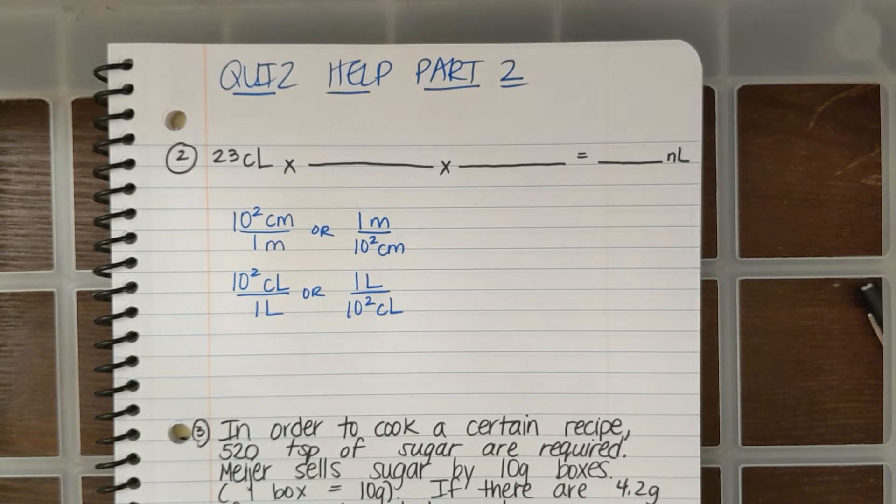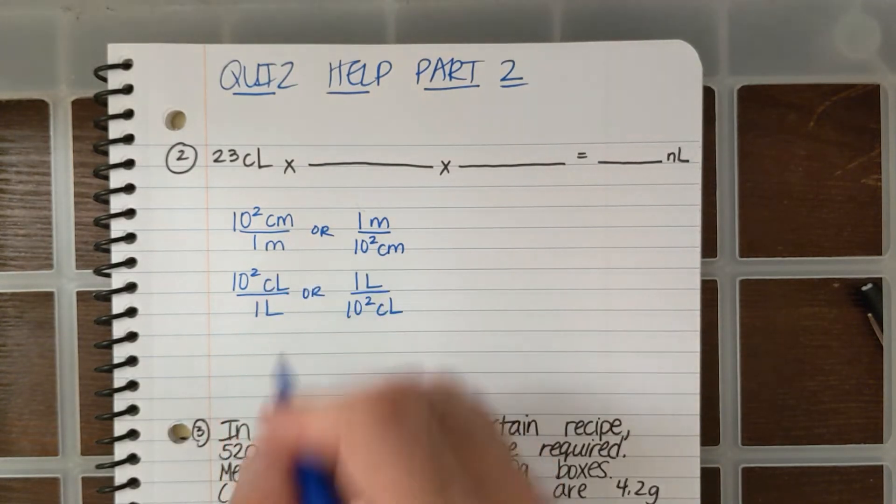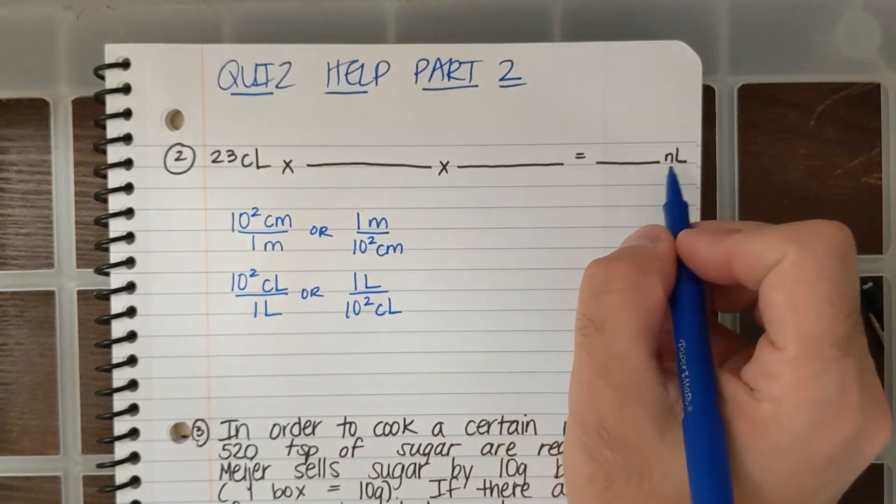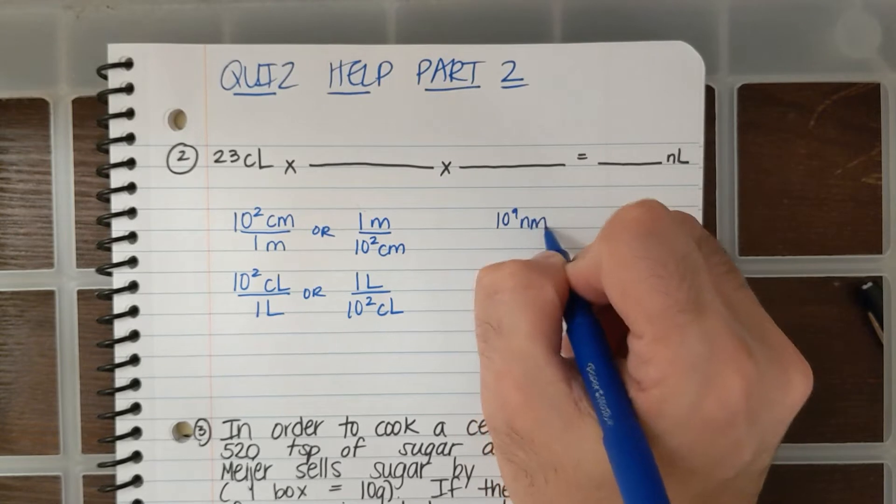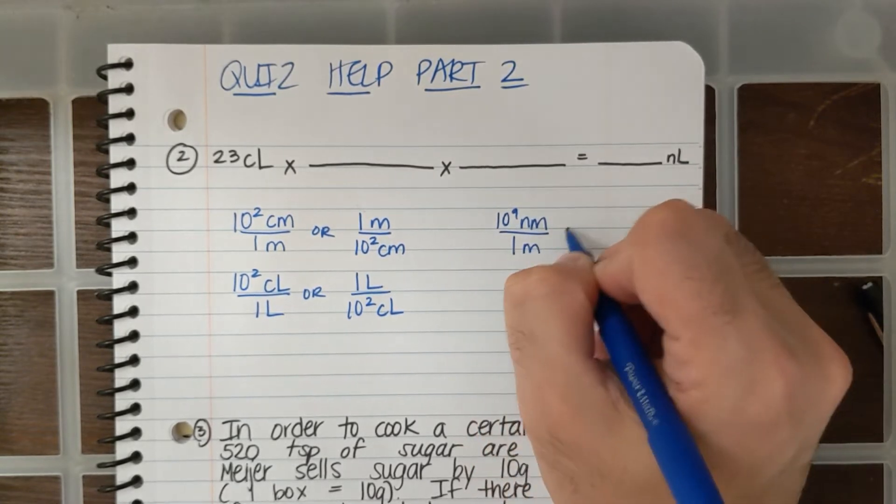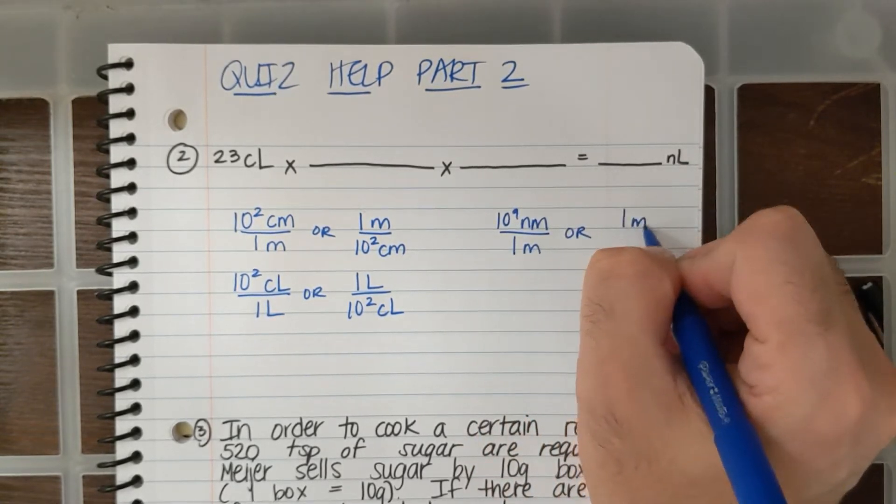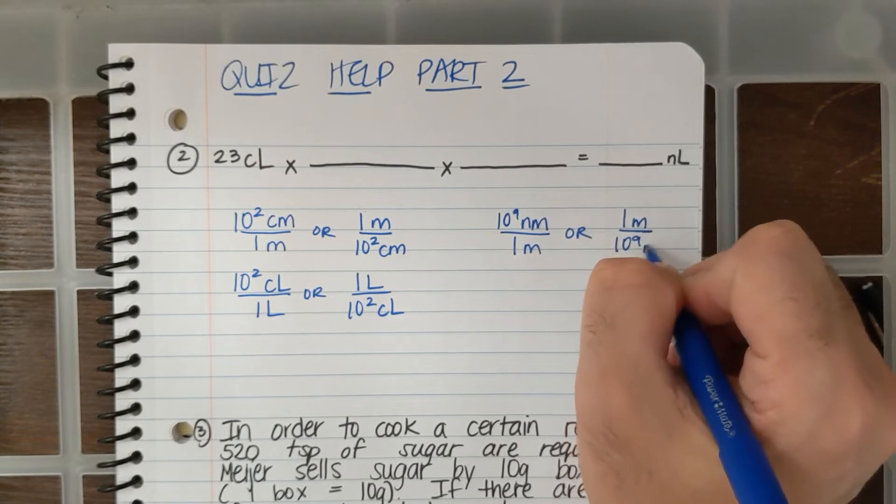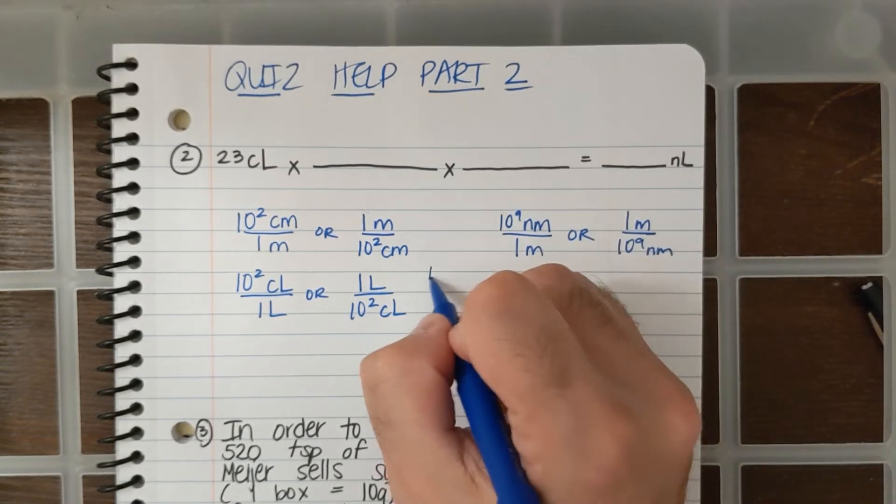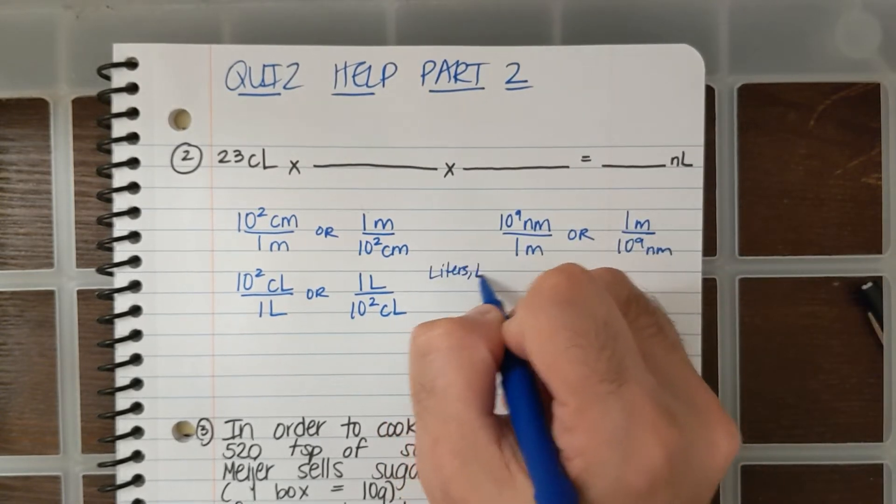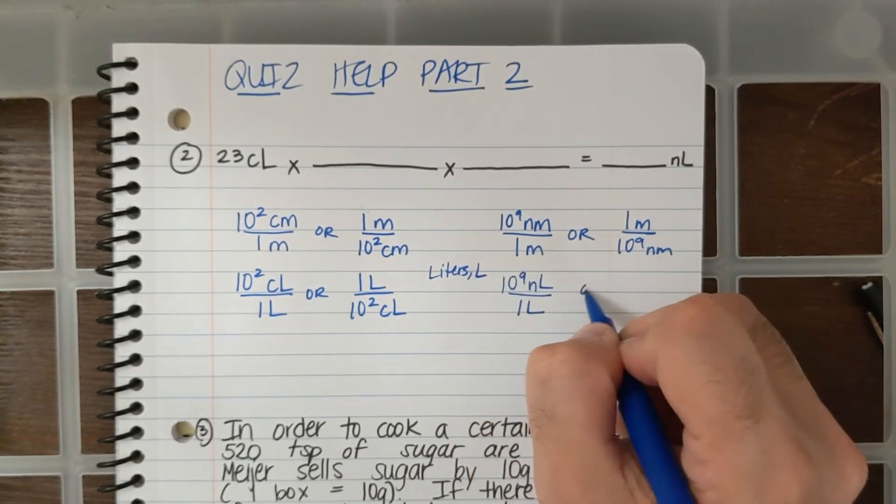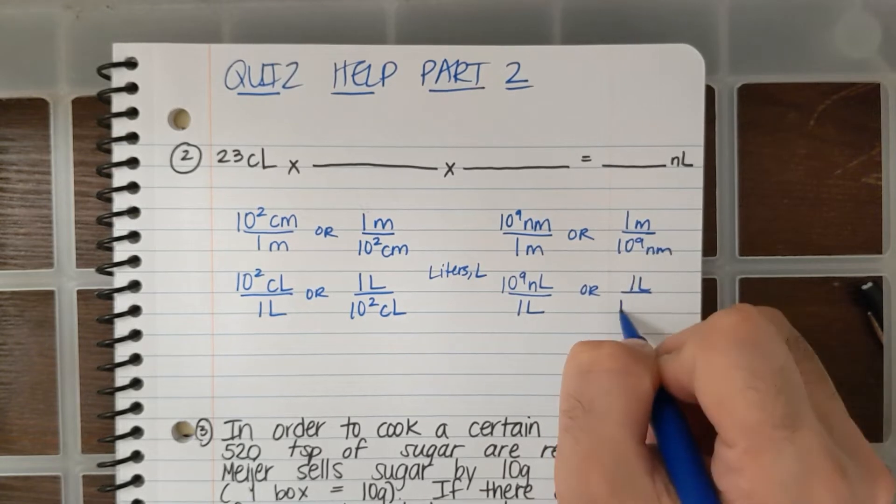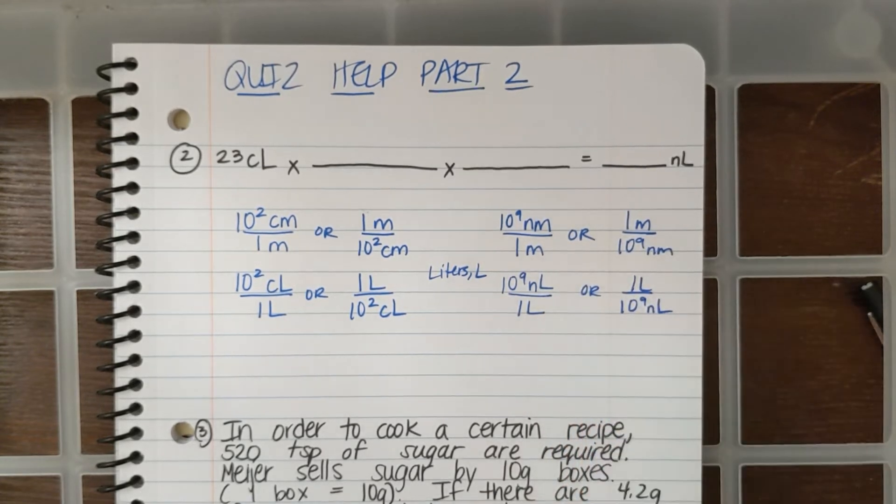I'm just trying to show you that even though you have a bunch of conversions that have meters, I could change that letter M to L. And then we also have nano: 10 to the ninth nanometer is 1 meter, or 1 meter is 10 to the ninth nanometer. And I could use liters for this one. So I could do 10 to the ninth nanoliter over 1 liter, or 1 liter over 10 to the ninth nanoliter.